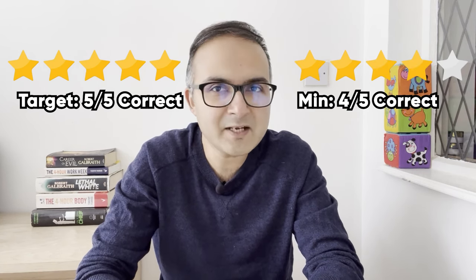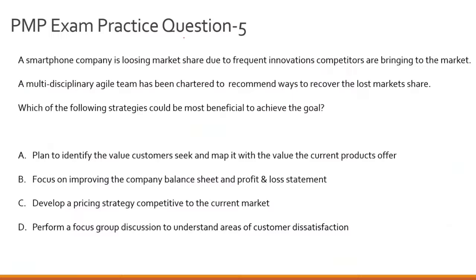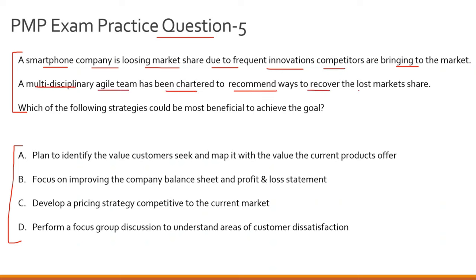I hope you are finding this exercise helpful. Remember, the target is to get all five questions correct, but the minimum expectation is at least four out of five. Here comes the fifth and final question. A smartphone company is losing market share due to frequent innovations competitors are bringing to the market. A multidisciplinary agile team has been chartered to recommend ways to recover the lost market share. Which of the following strategies could be most beneficial to achieve this goal?